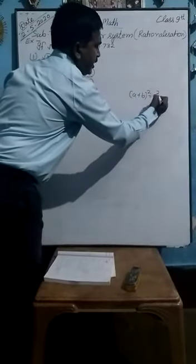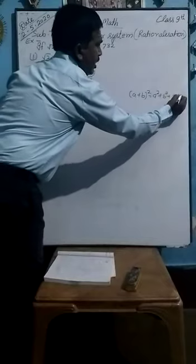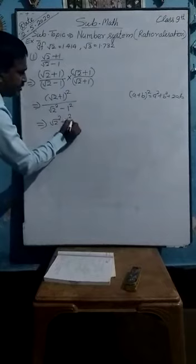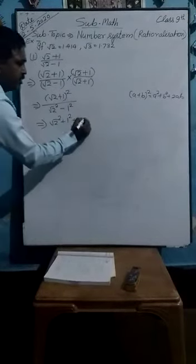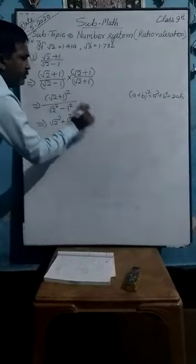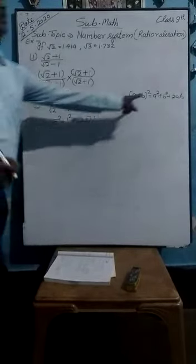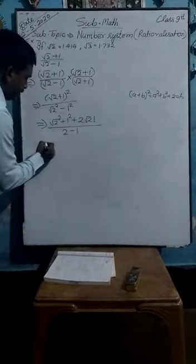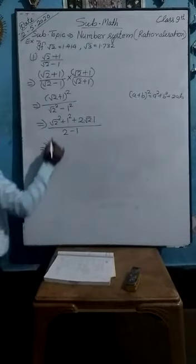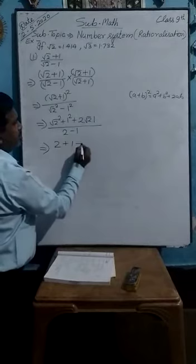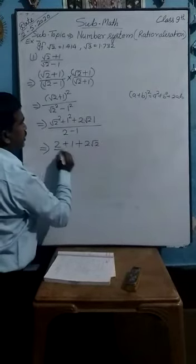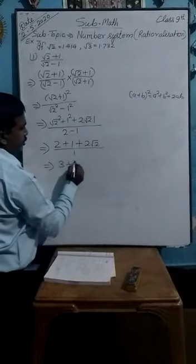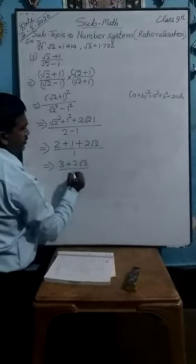Now expand it: under root 2 square plus 1 square plus 2 into the value of root 2, which is a, and the value of b, that is 1. By using this formula, we have: under root 2 square plus 1 square plus 2 into under root 2 into 1, upon 2 minus 1. You will get here: 2 plus 1 plus 2 root 2, upon 1.